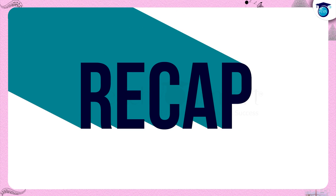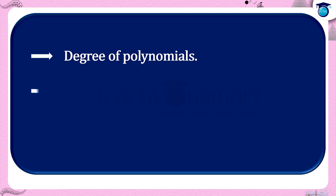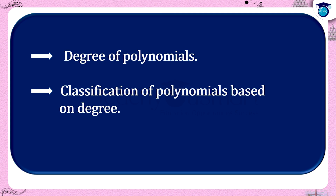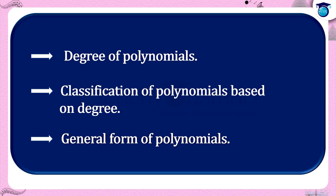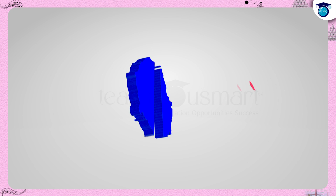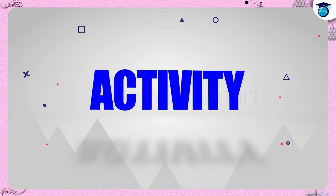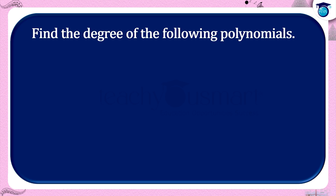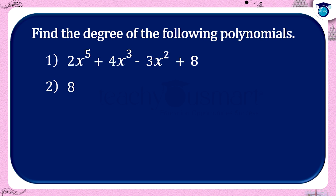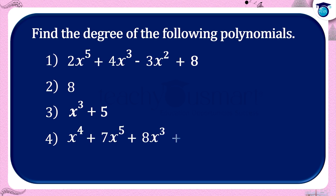Let's have a quick recap. Today we discussed the degree of polynomials, the classification of polynomials based on degree, and the general forms of polynomials. Before winding up, let us check how much you understood by doing an activity. Find the degree of the following polynomials: (1) 2x⁵ + 4x³ − 3x² + 8, (2) 8, (3) x³ + 5, (4) x⁴ + 7x⁵ + 8x³ + 3, (5) 0.